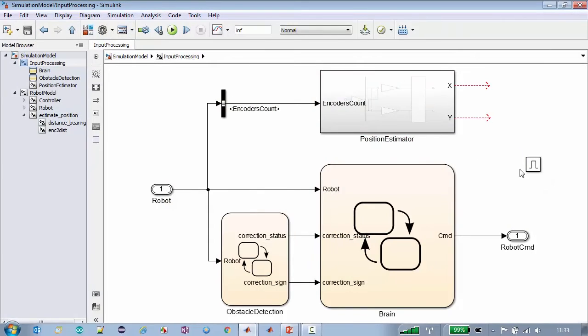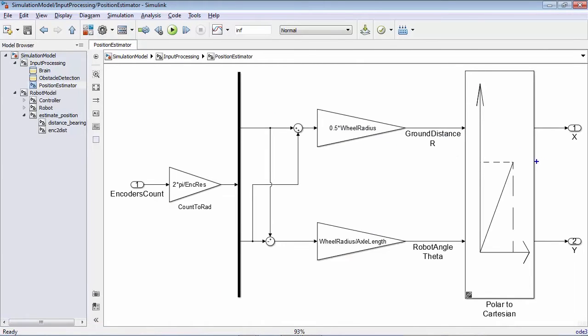Here is a proposal. We first need to convert the raw encoder counts into radian angles that have a more physical meaning. Then, on the upper path, we project the average left-right angle onto a ground distance by multiplying it by the wheel radius.